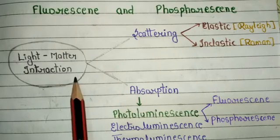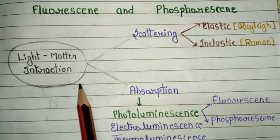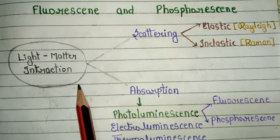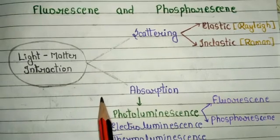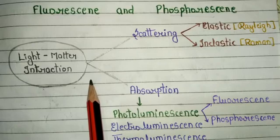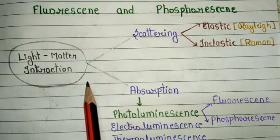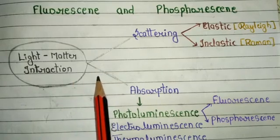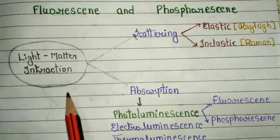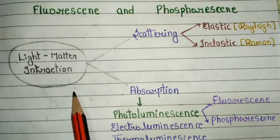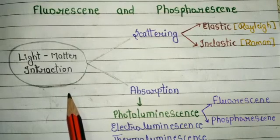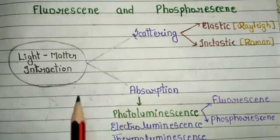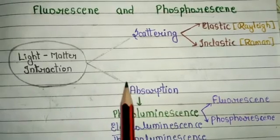It is a very important topic for semester exam point of view, as well as for any exam point of view. In this particular video, we are going to discuss its principle, its basic introduction, and the factors that affect fluorescence and phosphorescence. So before we discuss about the principle, we have to know how fluorescence and phosphorescence occur and what is the basic definition of fluorescence and phosphorescence.